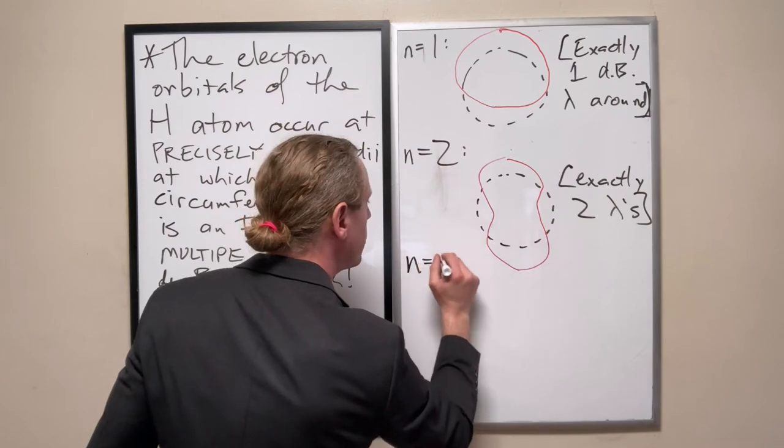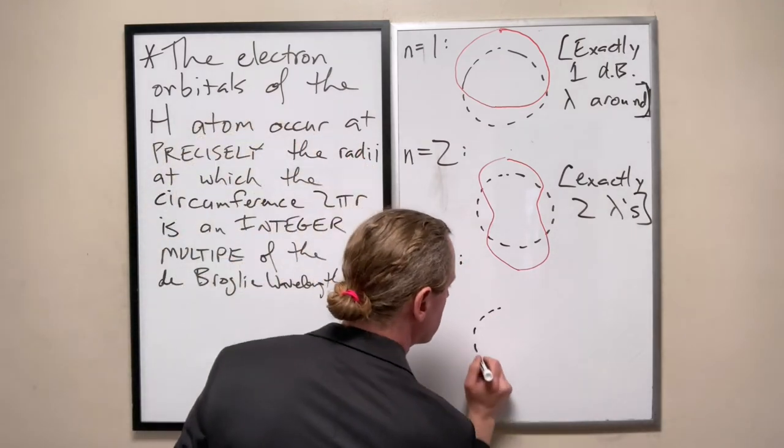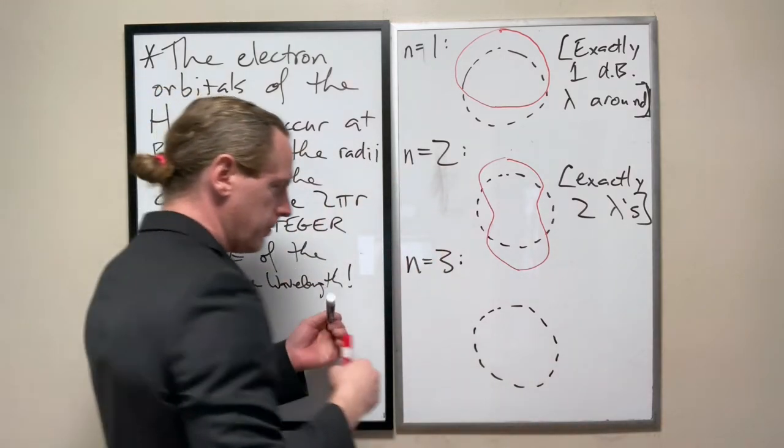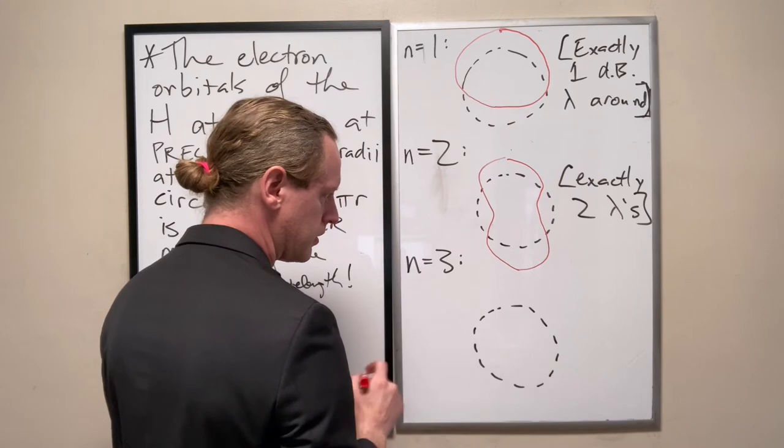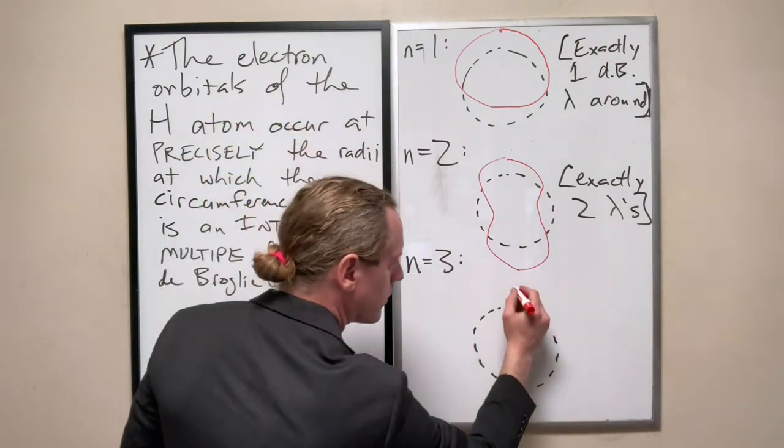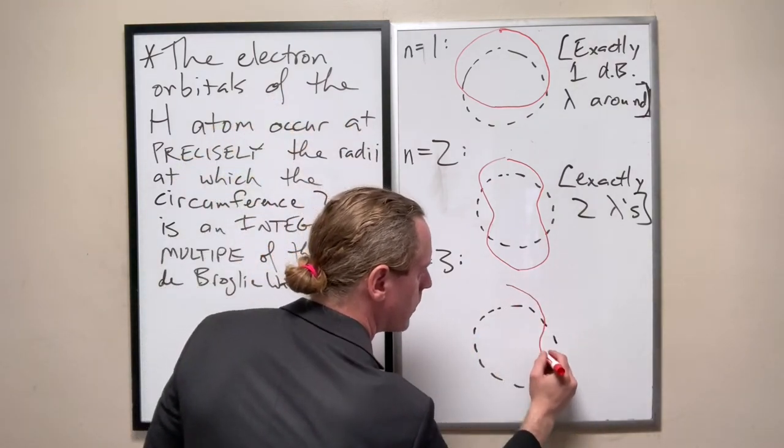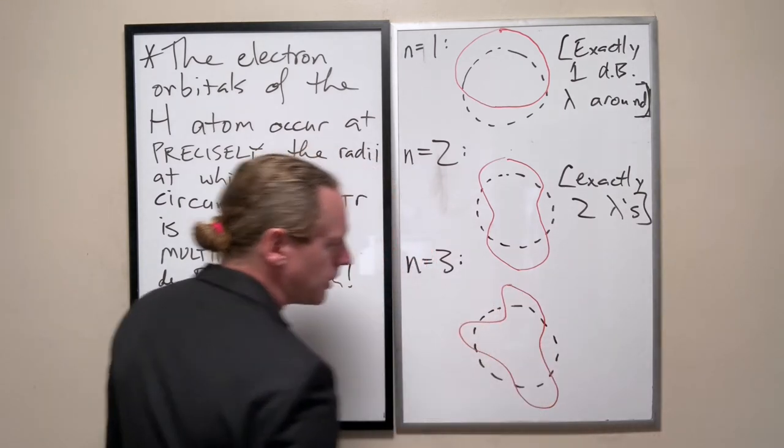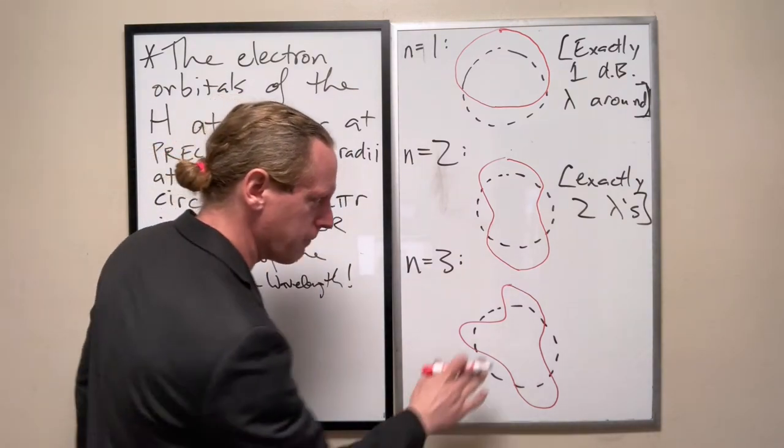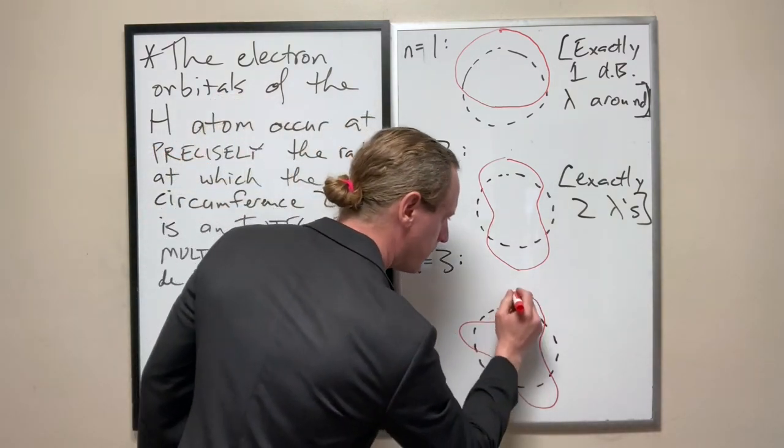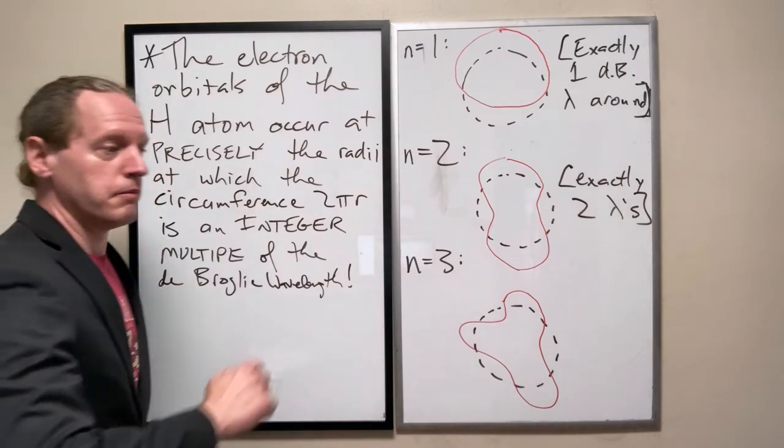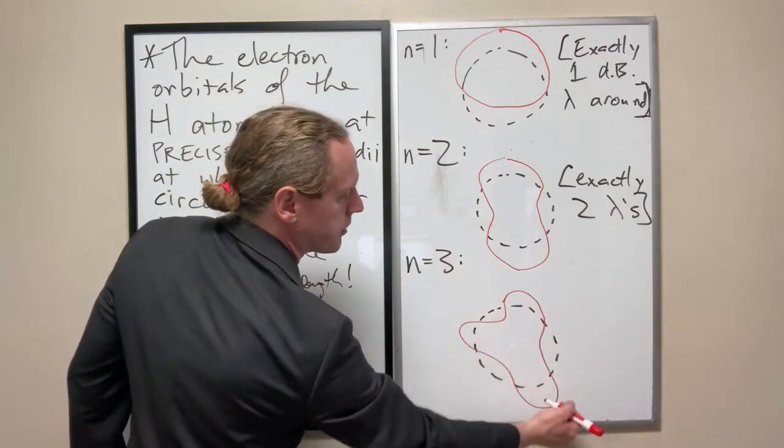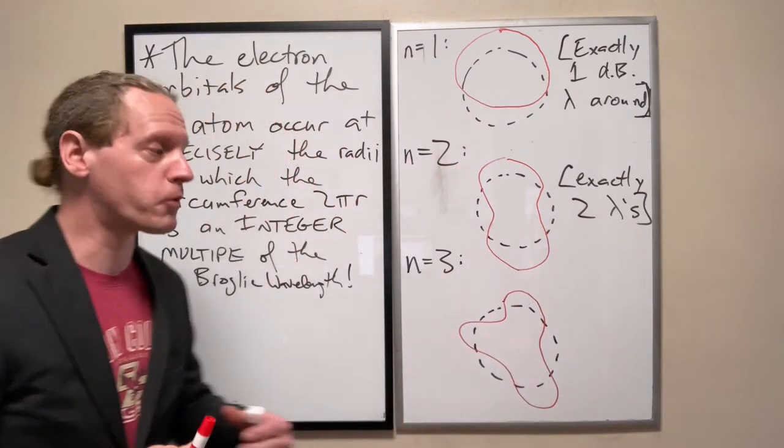I think we can see where this is going. n equals 3. That was close enough. It starts with kind of a boomerang here, or a trimerang, which is a word I just made up. But it exactly matches back up after precisely three de Broglie wavelengths.